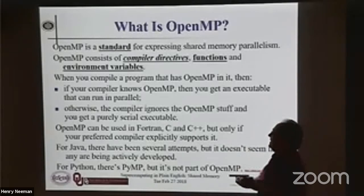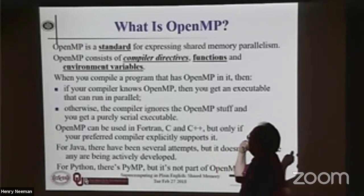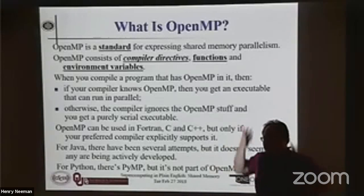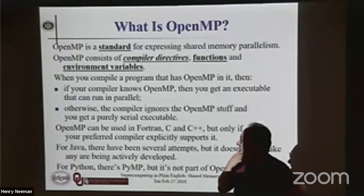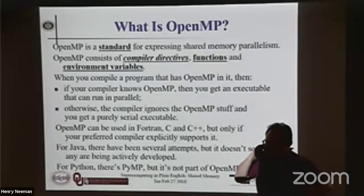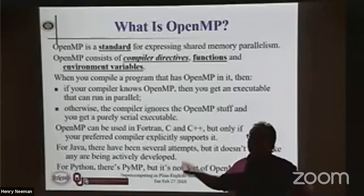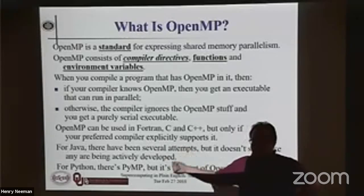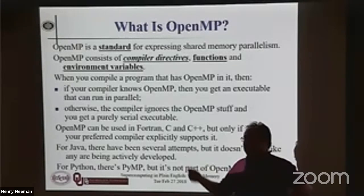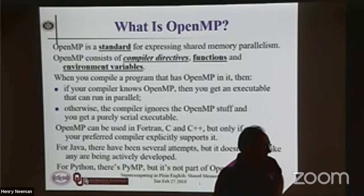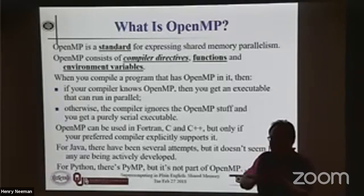OpenMP has compiler directives, some functions, and some environment variables — and these are all standardized. There's an OpenMP governing body, and I think it's openmp.org where you can download a copy of the standard, which is ironically in PDF. When you compile a program with OpenMP stuff in it, if your compiler knows OpenMP and you tell it you want to use OpenMP, then you get OpenMP parallelism. If your compiler doesn't know OpenMP, or it does but you don't turn OpenMP on, then all of that gets ignored — it gets treated as comments. This only applies to Fortran, C, and C++.